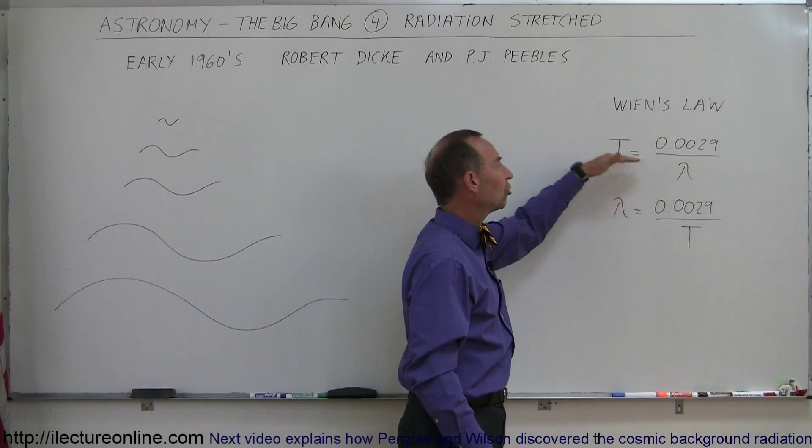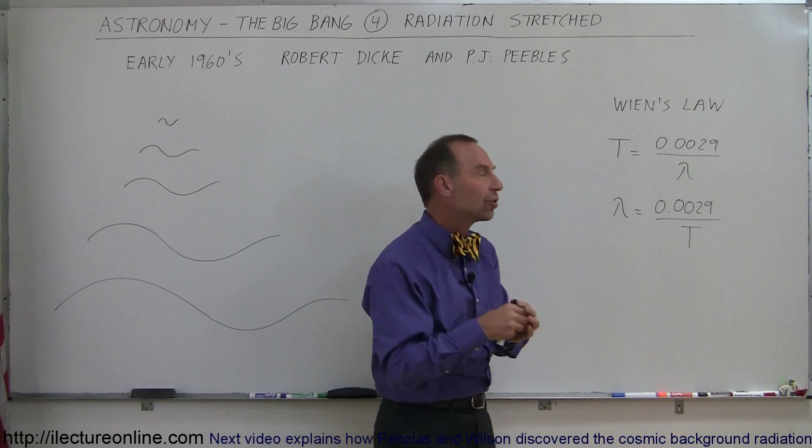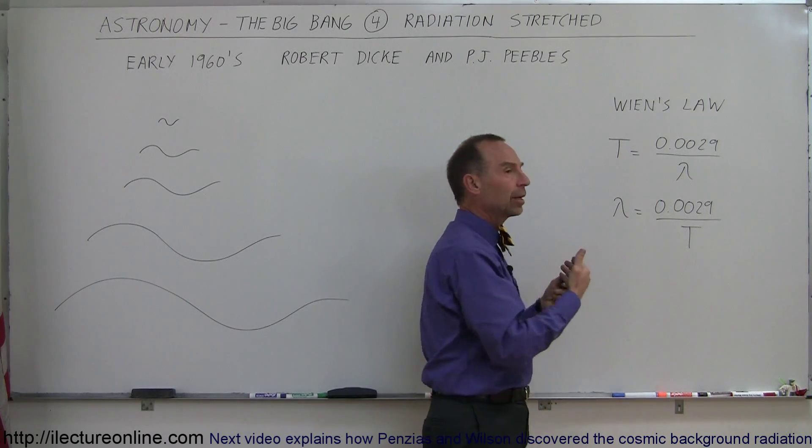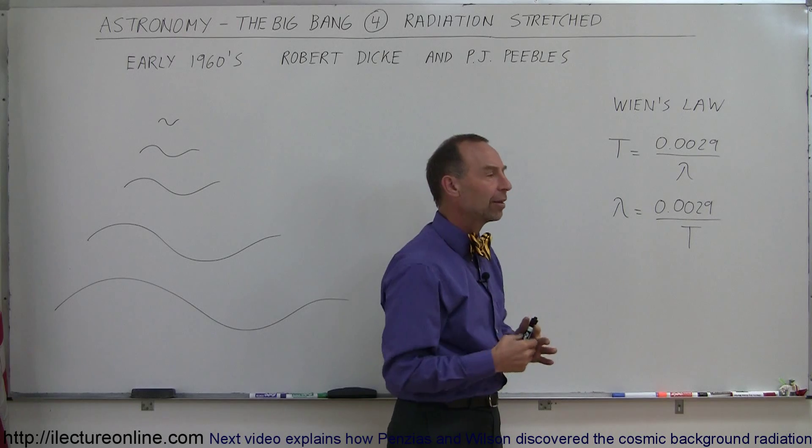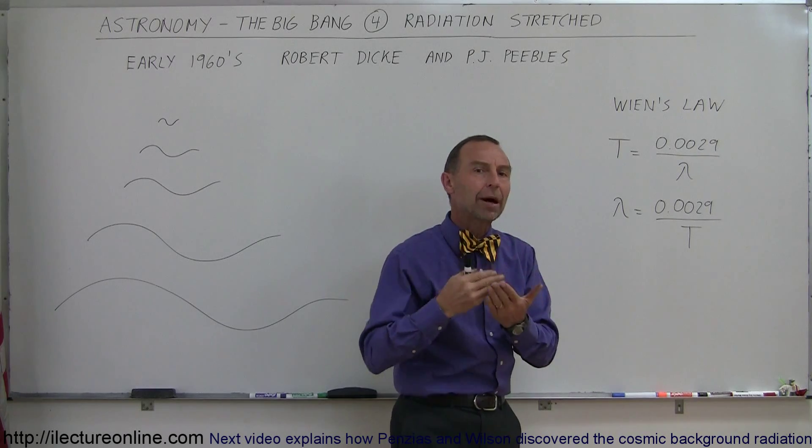Wien had discovered that there's a relationship between the temperature of an object and the kind of radiation that is emitted from that. So we have the concept of black-body radiation.